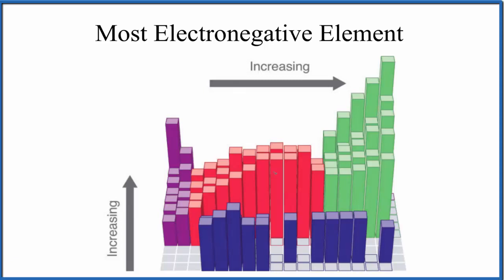You can clearly see that as we go up groups, electronegativity increases. As we go across periods, electronegativity increases as well.